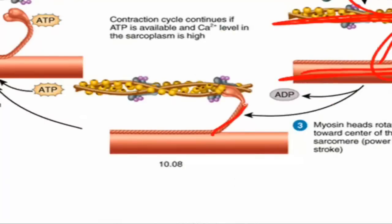The myosin heads, using that energy, are now going to rotate towards the midline of the sarcomere. That rotation of the myosin head is going to pull the thin filament towards the center of the sarcomere. This is happening on both sides of the M line, so two thin filaments are being pulled towards the midline at the same time.